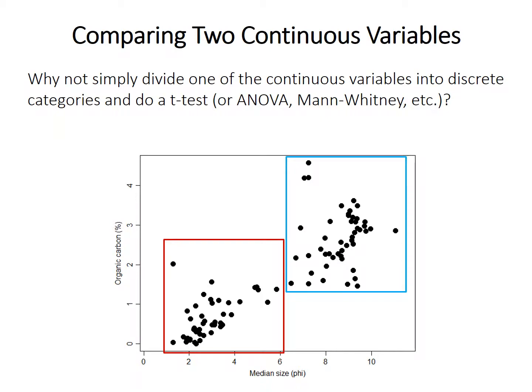One possibility is to divide one of the continuous variables into arbitrary categories and then do a t-test, or a Mann-Whitney U-test, on the other values. For example, we could cut median grain size on the x-axis into two categories — one less than 6 units and one greater than 6 units — and within those categories perform a t-test on the continuous values of organic carbon content.